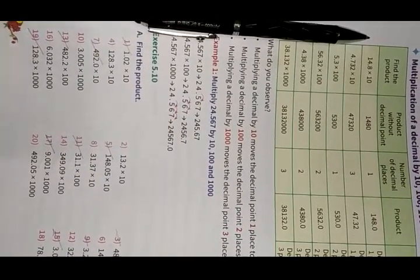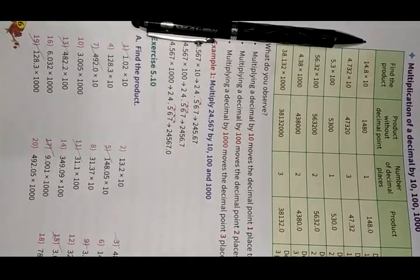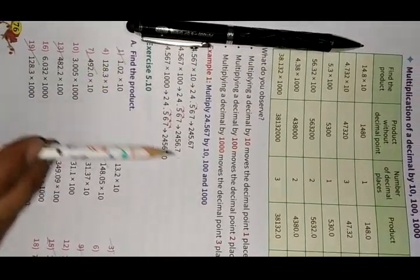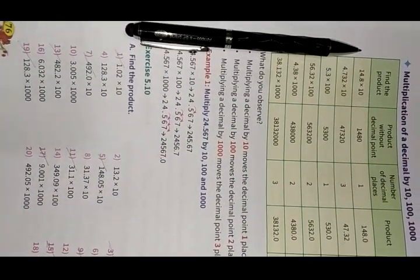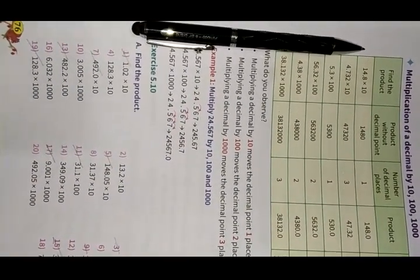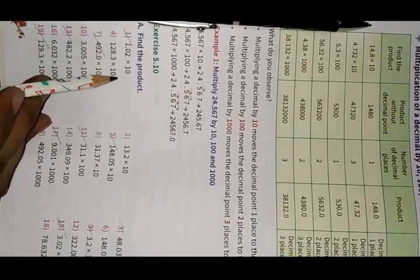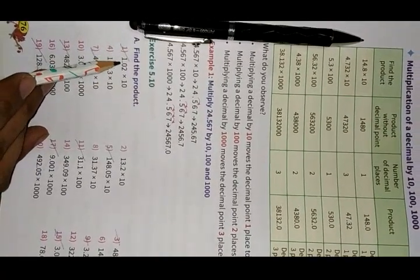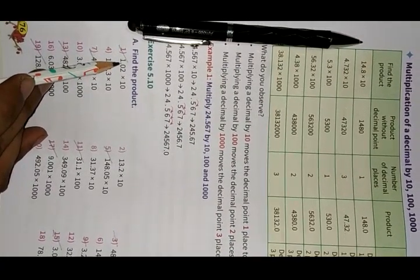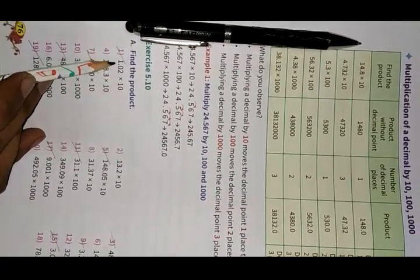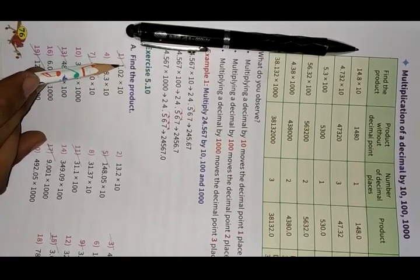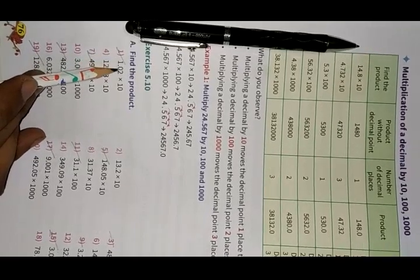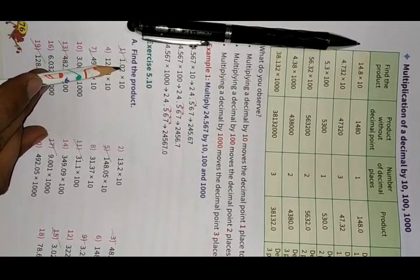Exercise 5.10 — Multiplication by 10, 100, and 1000. When we multiply any decimal number by 10, 100, or 1000, we don't need to do any multiplication — we just shift the decimal. If we multiply by 10, we shift the decimal one place to the right. For example, 1.02 into 10 gives 10.2. And 24.567 into 10 gives 245.67.